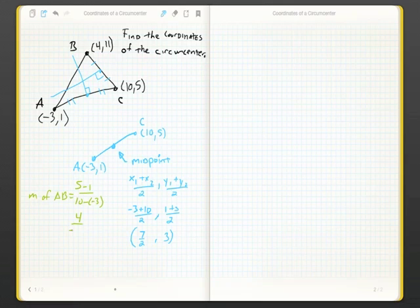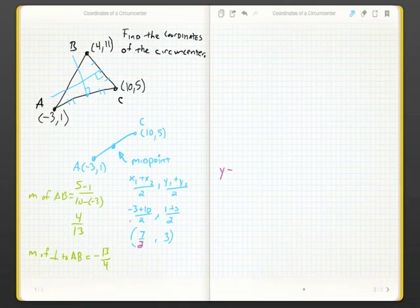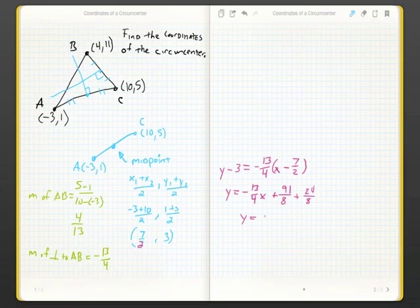And, unfortunately, I wrote this wrong. It should be the slope of AC, not the slope of AB. Remember, you can pause this at any time to figure things out if you need to. So, here, I found the slope of AC is 4 over 13, and then I take the negative reciprocal, which is negative 13 over 4, and I found my midpoint is 7 over 2 and 3.